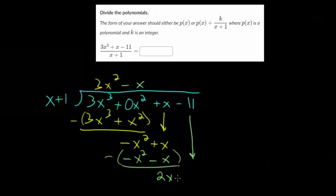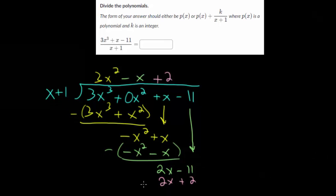We bring down the -11 and repeat the process. Now we have to multiply this by 2 to get 2x as our leading term. Multiplying by 2, we get 2x. And 2 times 1 is 2. Now we again subtract. We need to find that remainder. 2x - 2x is 0. -11 - 2 would be -13. And since no other numbers can be brought down, this is our remainder.